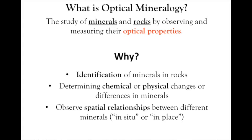When minerals formed, they were locked into a specific location in that rock. When we look at them in thin section using a light microscope to identify the types of minerals there, we can actually see the relationship of them to their neighbors. This is different from other techniques like X-ray diffraction, where we grind up samples and get information about mineral identities but lose the spatial relationships.